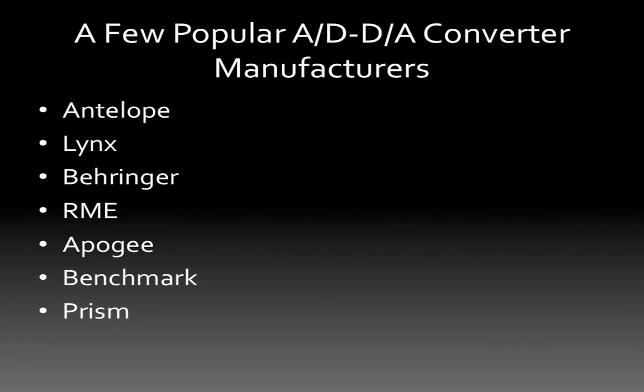Here are a few popular manufacturers of A-to-D and D-to-A converters. Prism, Benchmark, and Apogee all make Pro Tools HD-compatible interfaces. Behringer makes cheaper, more prosumer versions of A/D and D/A converters. RME is definitely geared towards pro audio but is still affordable. The one thing you'll find when you start looking at A-to-D converters is that they're expensive compared to regular audio gear.